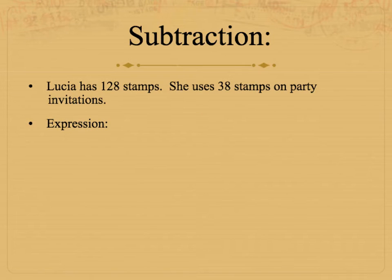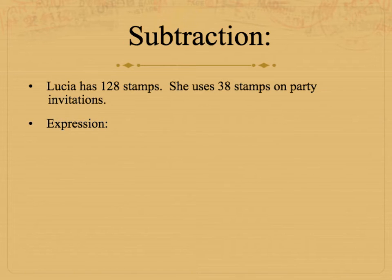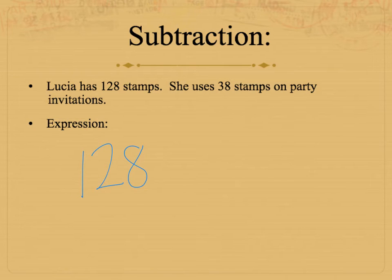All right, this is a subtraction expression. Lucia has 128 stamps. She uses 38 stamps on party invitations. Show an expression that shows how many stamps Lucia has. Take a quick minute to write this expression. Lucia has 128 stamps. She uses 38, which means she's subtracting — 128 minus 38. And no equal sign.